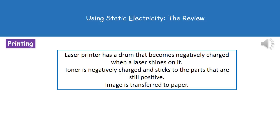The toner — basically the ink — is also negatively charged, so it is attracted to the positive parts of the drum, i.e. the parts that haven't had the laser shine on them. As the paper passes through, the toner is transferred onto the paper, producing the printed image.